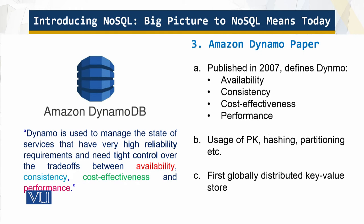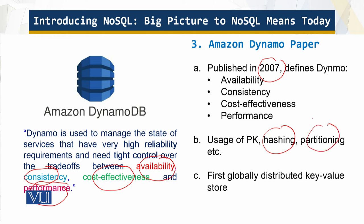The Amazon Dynamo paper stresses consistency, cost effectiveness, performance, and availability. It was published in 2007. The paper describes how a lot of Amazon's data is stored using a primary key, how consistent hashing is used to partition and distribute the data — making it distributed. This is probably the first globally distributed key-value store to be introduced.